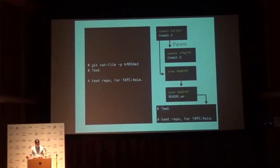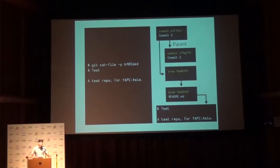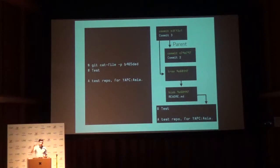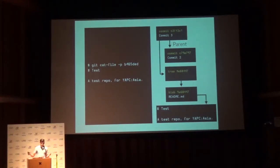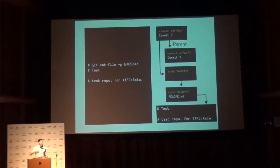If we dereference that pointer and look at the object in Git, we can finally see the contents of that actual blob on disk. So any time you want to do anything in Git, you have to follow these pointers all the way back. If you want a file four commits back from master at a specific directory path, you start at the head, work back to find the commit, then traverse all the way down the directories to find the actual file. This iterative lookup can cause a lot of problems if we're not efficient with it.